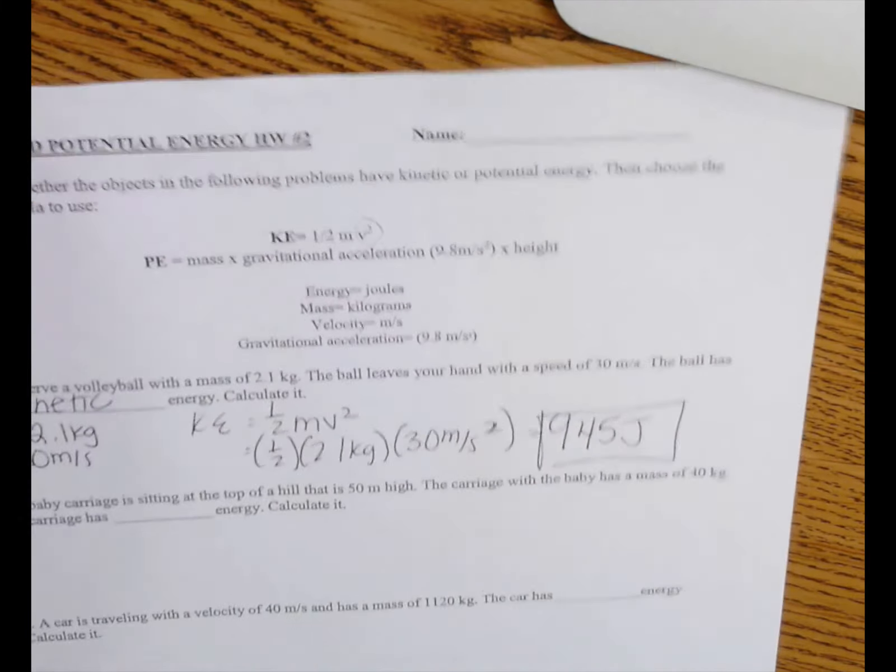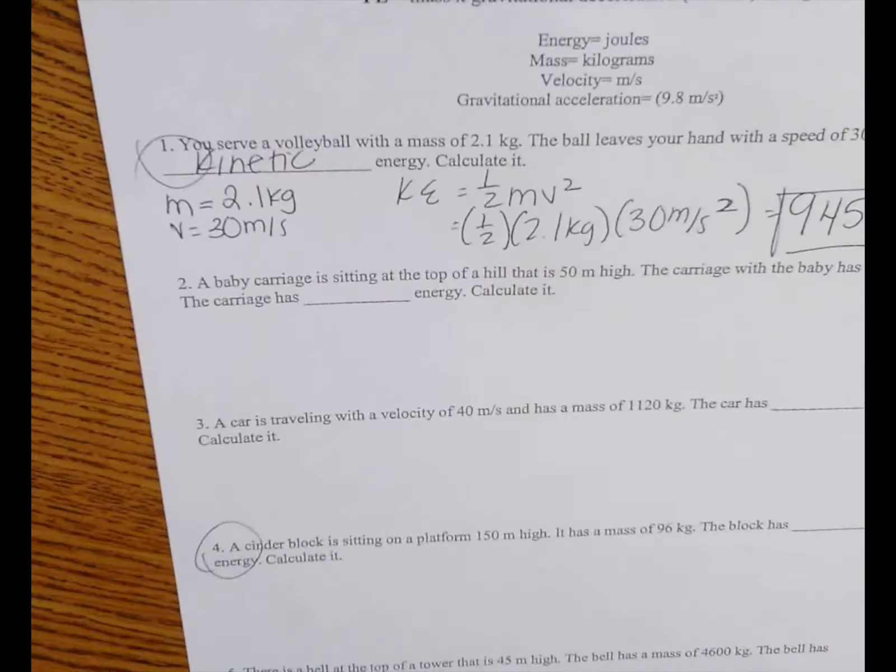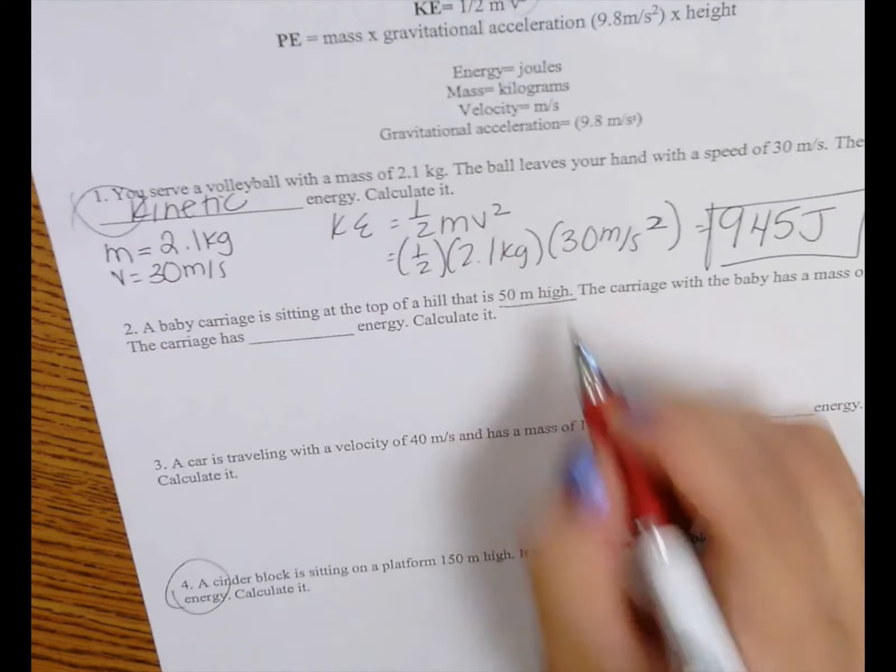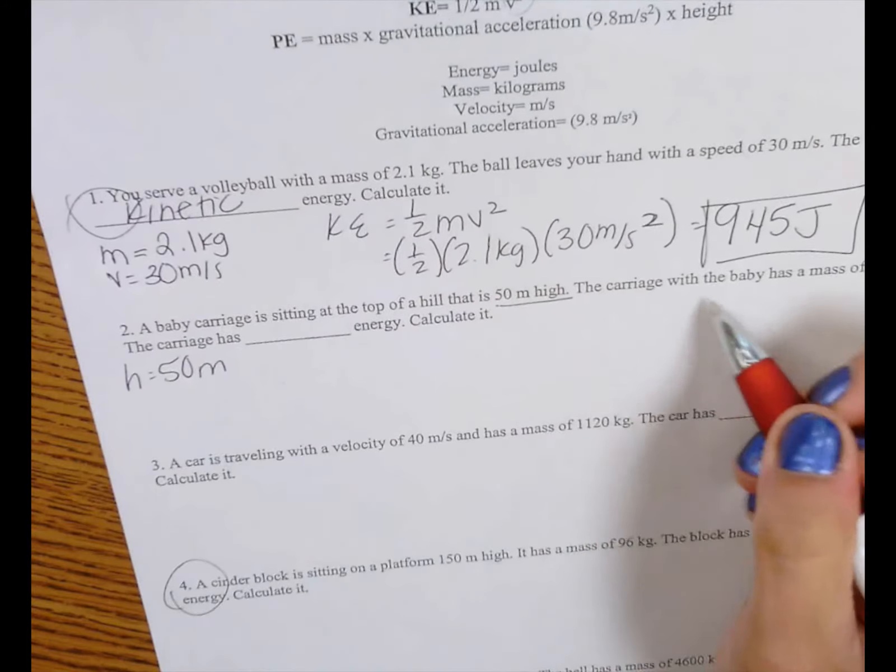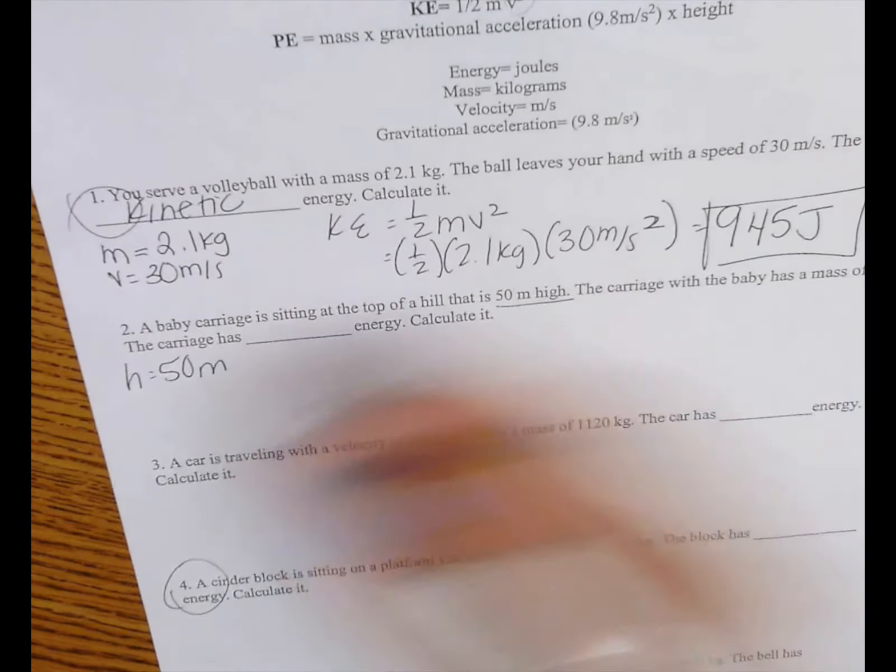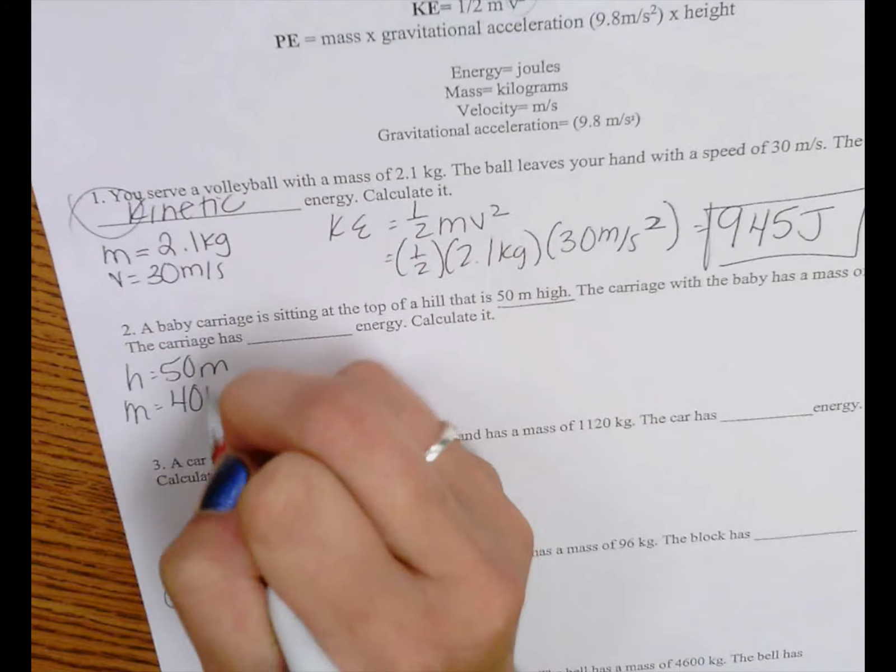The kinetic energy is 945, and we measure energy and work in joules. All right, let's go ahead and do this next one. A baby carriage is sitting at the top of the hill that is 50 meters high. So we have height equals 50 meters. The carriage with the baby has a mass of 40 kilograms. So the mass equals 40 kilograms.